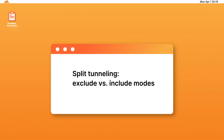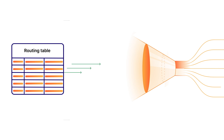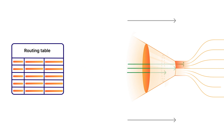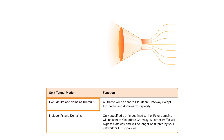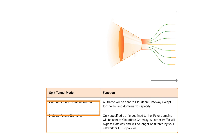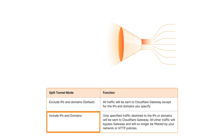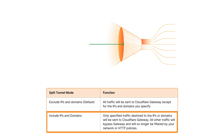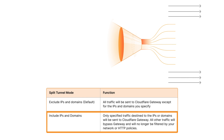Next up, split tunneling — a feature that allows you to control what IP traffic goes through the Warp virtual interface or tunnel. There are two ways to configure it. The first mode is exclude IPs and domains: this is the default setting, where all traffic will be sent to Cloudflare Gateway except for the IPs and domains you specify. The second mode is include IPs and domains: only traffic destined to the IPs or domains you specify will be sent to Cloudflare Gateway, and all other traffic will bypass Gateway and will no longer be filtered by your network or HTTP policies.